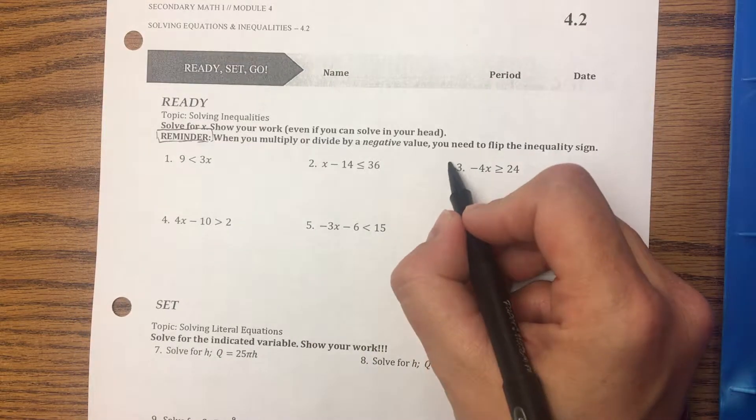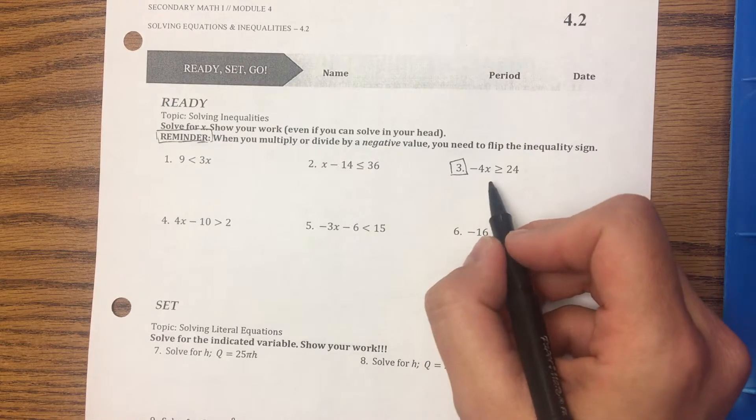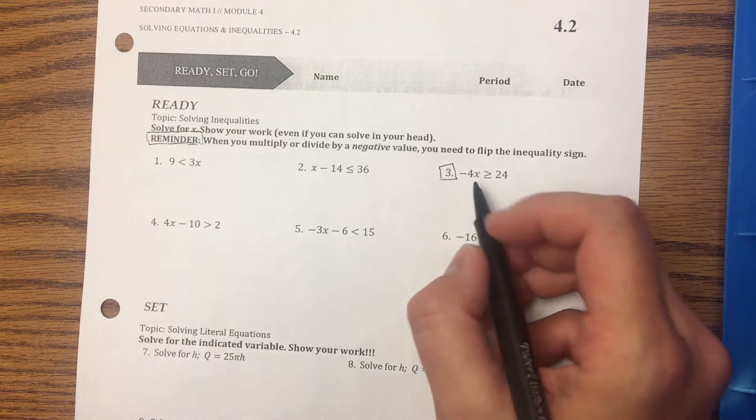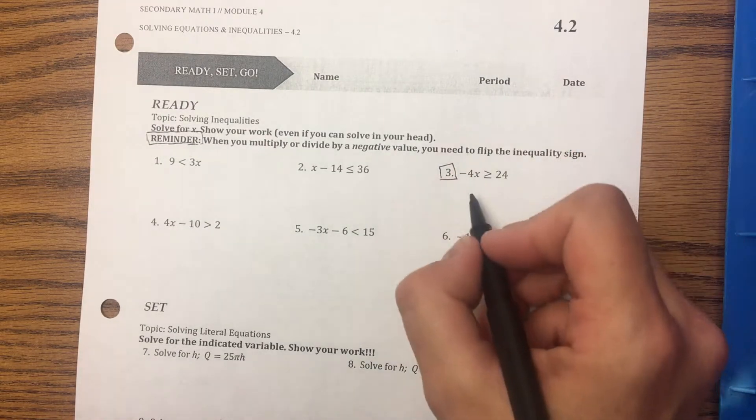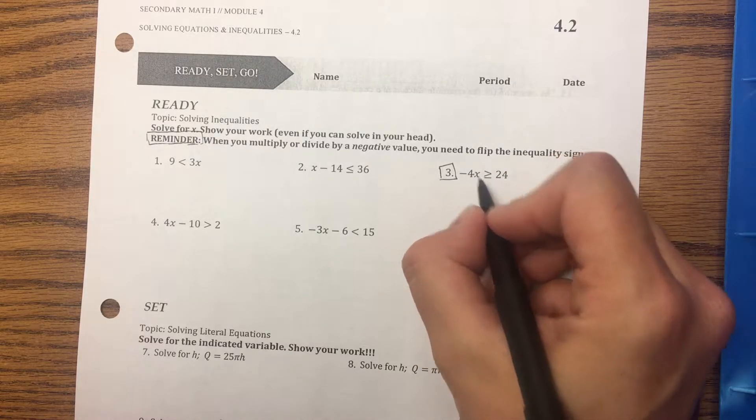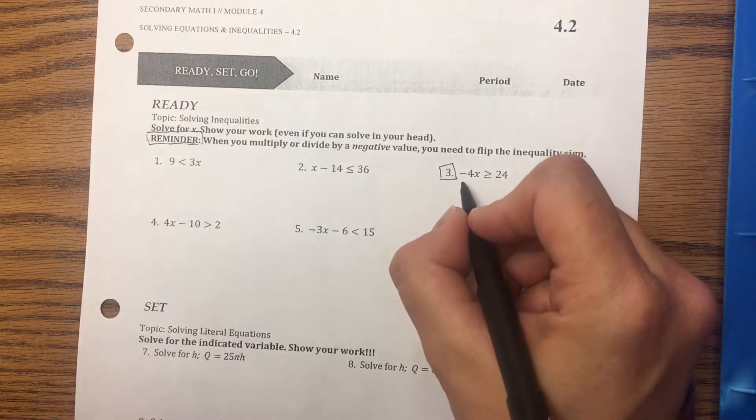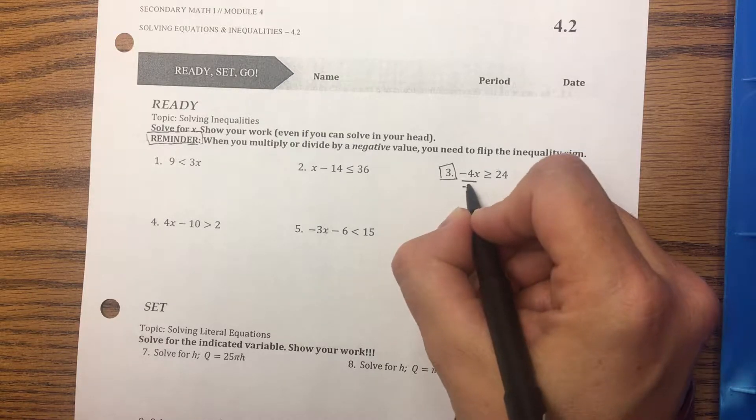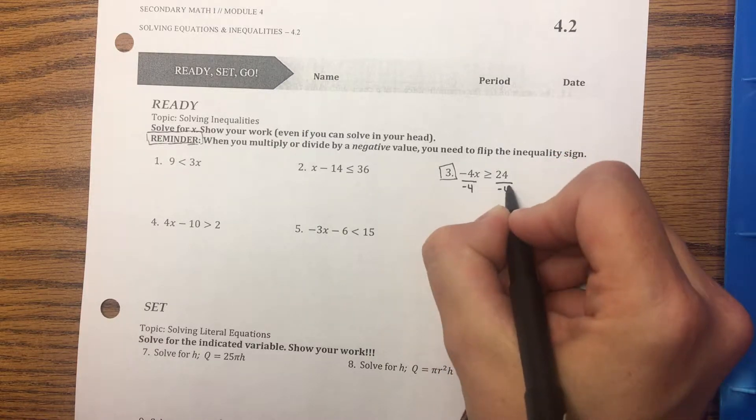So number three: if I want to solve this, get X by itself. You solve inequalities like you solve a regular equation. The opposite of multiply is divide, so I'm going to divide both sides by negative 4.